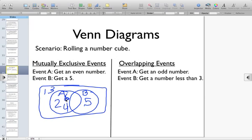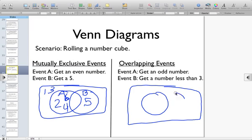Let's look at the other scenario. Rolling the same number cube, event A is I get an odd number. Then event B is I get a number that's less than 3. One way to think of this without drawing the diagram is to ask yourself the question, can I roll a number that's less than 3 that's an odd number? And if you can say yes, then you know you have an overlapping event.